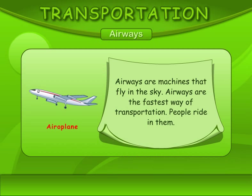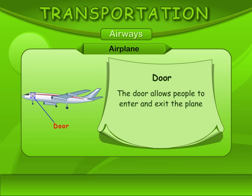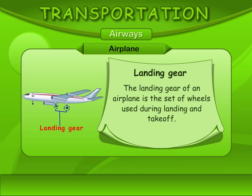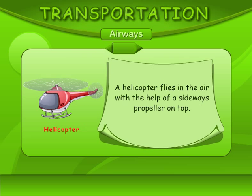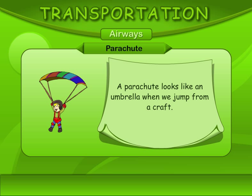Airways are machines that fly in the sky. Airways are the fastest way of transportation. People ride in them. A helicopter flies in the air with the help of a sideways propeller on top. A glider is a kind of gliding aircraft. A parachute looks like an umbrella when we jump from a craft.